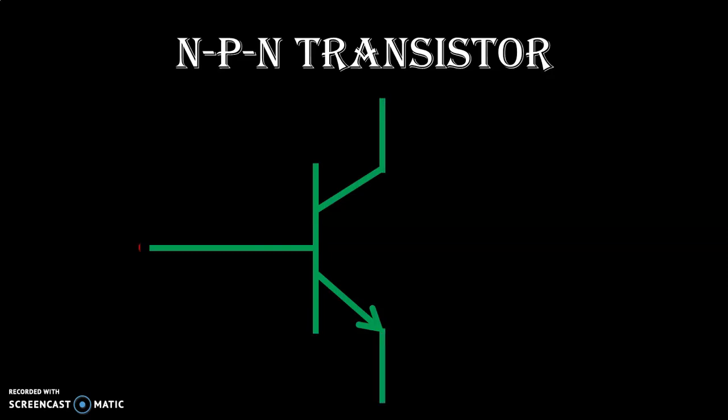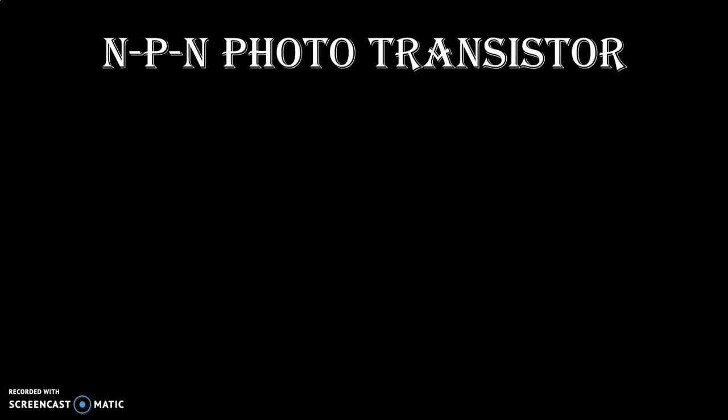NPN Transistor. Now you can observe the arrow at the emitter. The arrow is going outside for NPN type. Phototransistor.